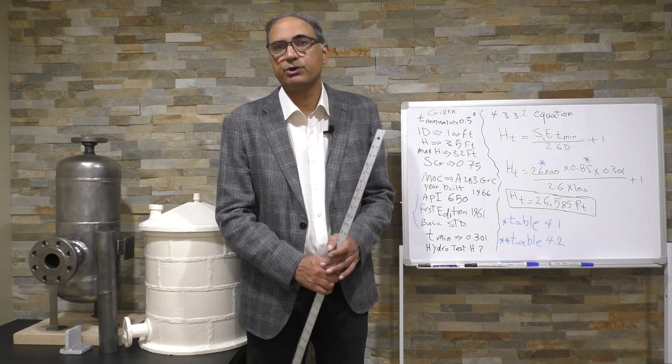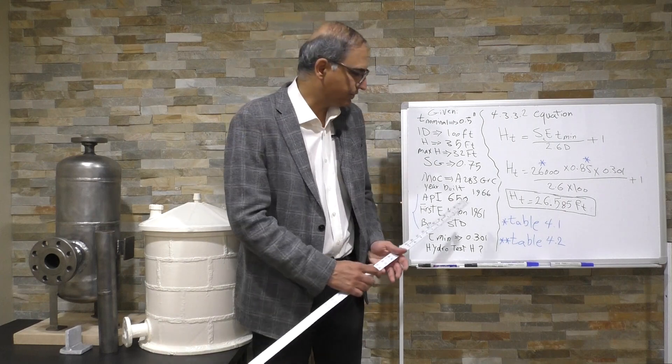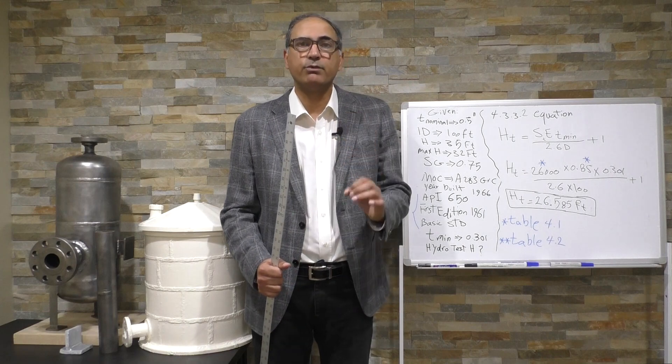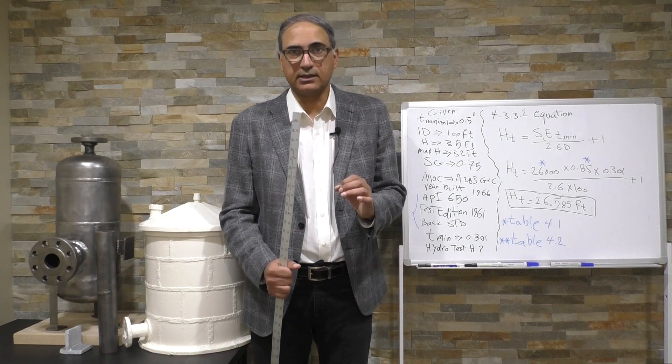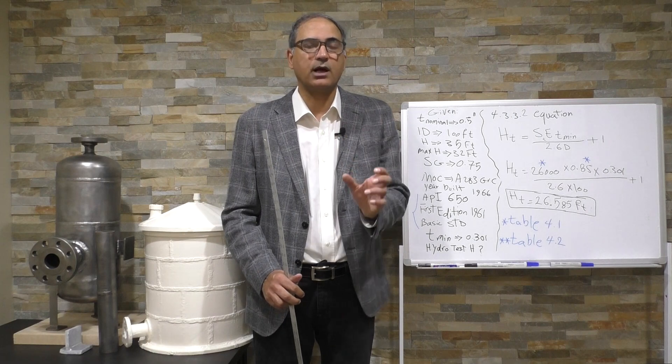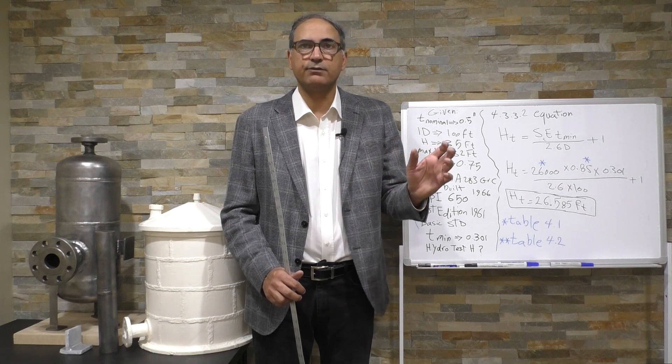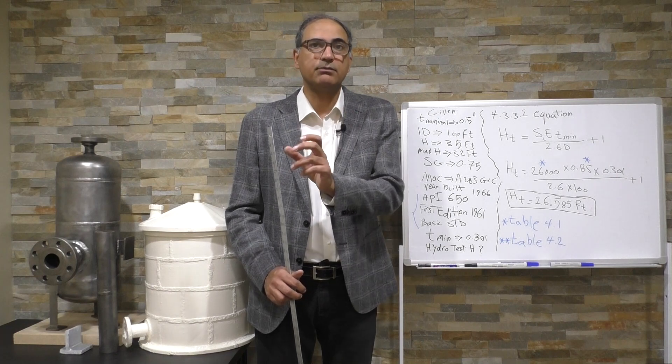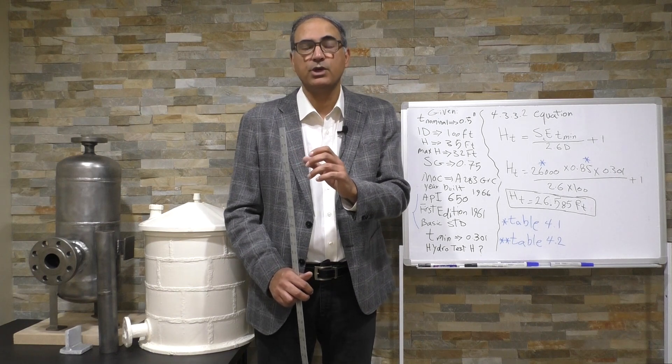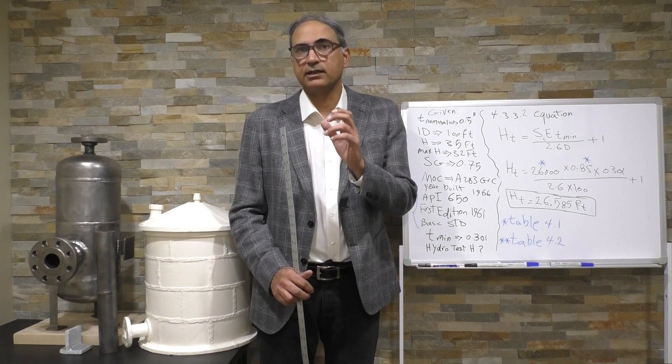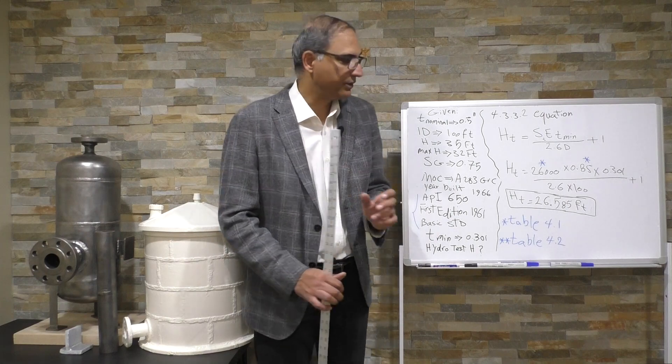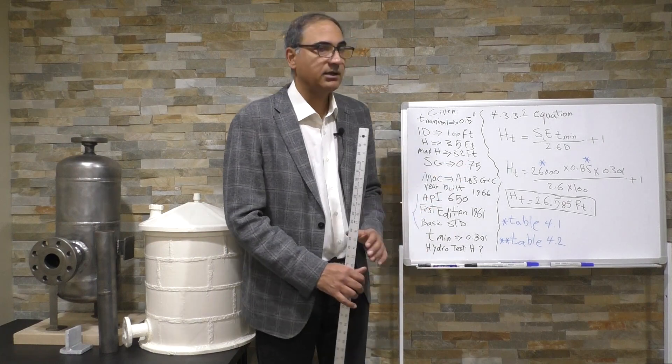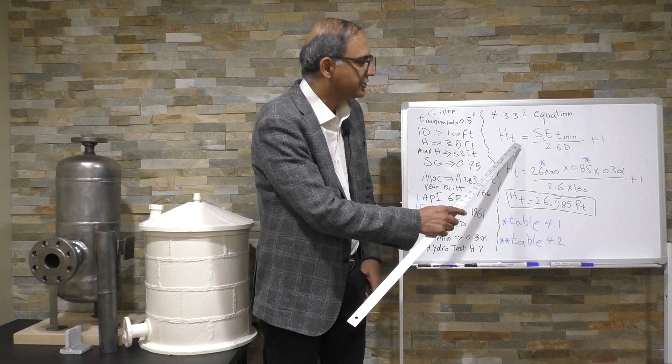If you go to table 4.1, you can find for this material what is the allowable stress when you are performing hydrostatic testing. Be careful, there are four columns there, two of them assigned for calculation of minimum required thickness, and two columns assigned to calculating hydrostatic testing height. We are going to use the hydrostatic testing height value because we are calculating the hydrostatic testing height.